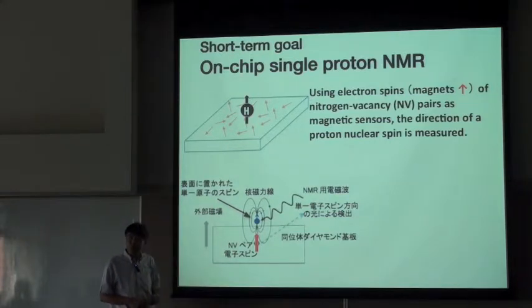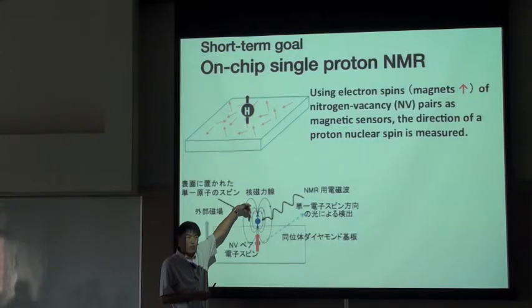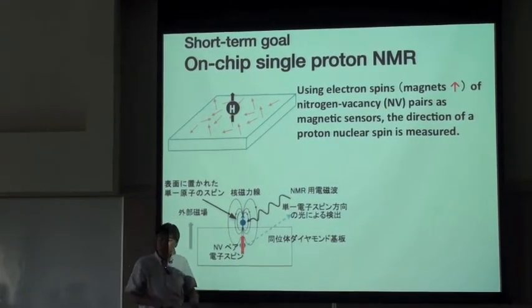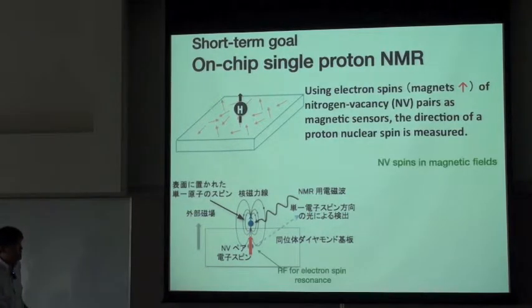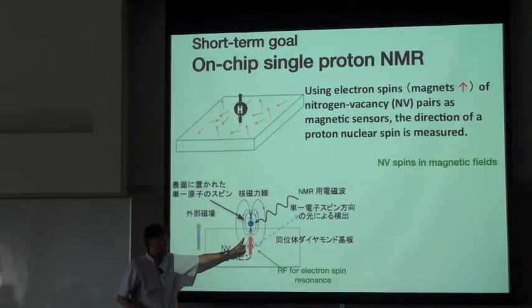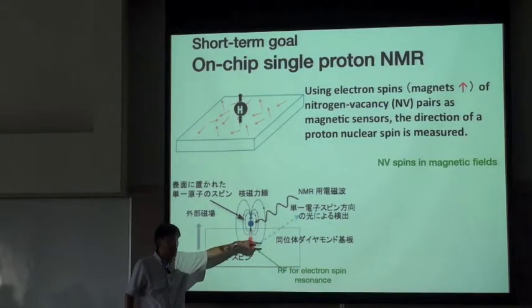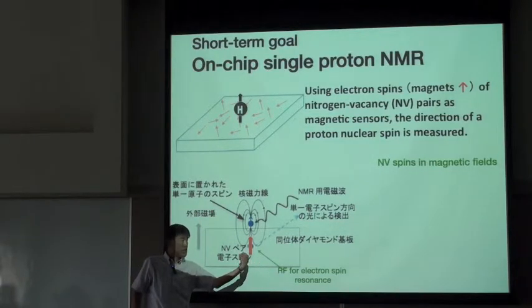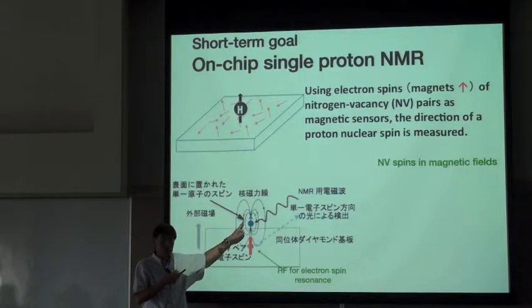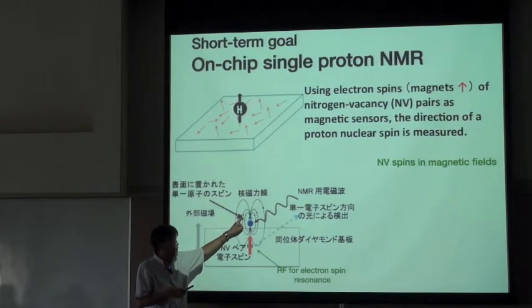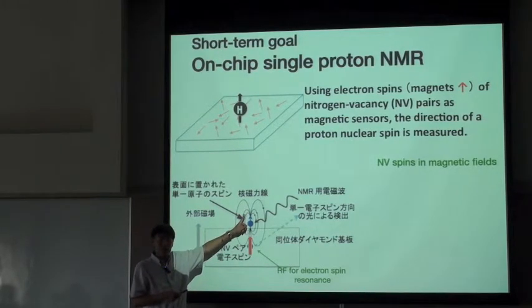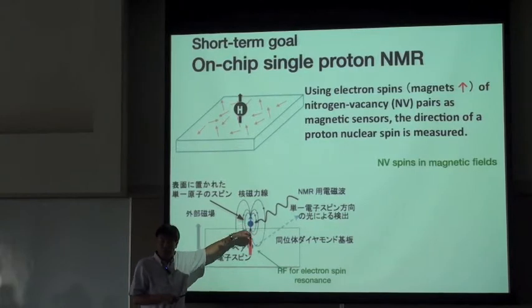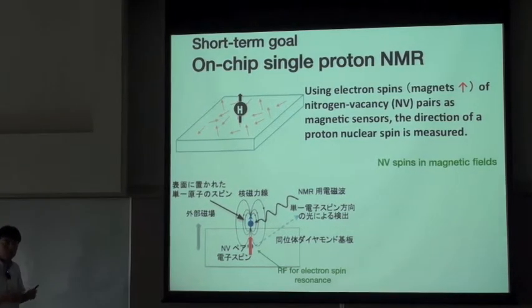This is different from classical magnets where flipping one magnet flips the other. Instead, we shine an RF pulse on the electron spin to move it sideways. This electron spin then rotates around the magnetic field — a precession — and the precession rate changes as a function of which direction the nuclear spin is pointing. So the precession speed changes between nuclear spin up and nuclear spin down. This is truly a quantum sensor in this sense.